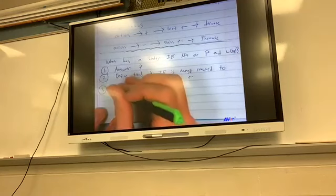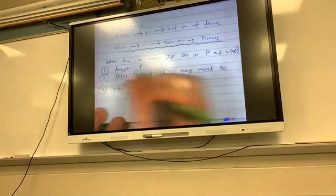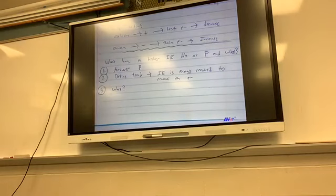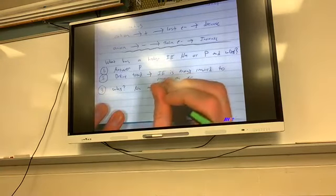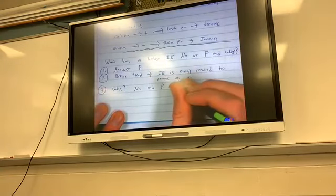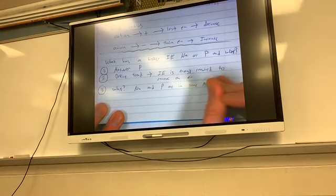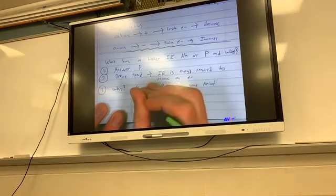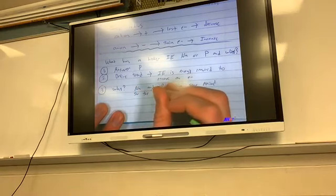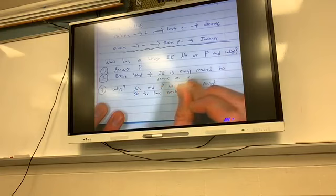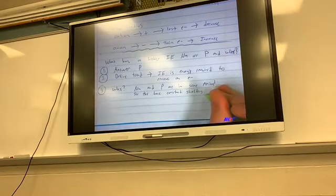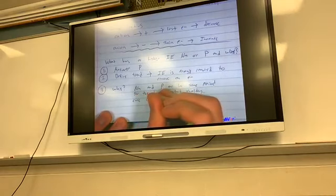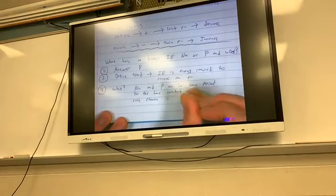And then step three is why. So you're going to explain why phosphorus has a higher ionization energy than sodium. Na and P are in the same period, so they have constant shielding. The core charge is increasing.